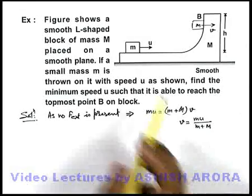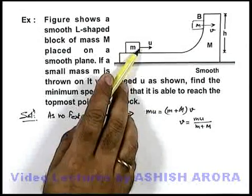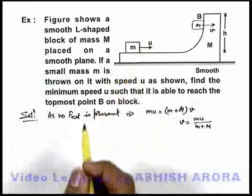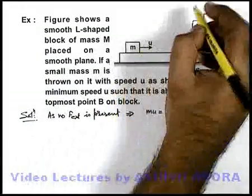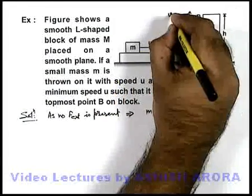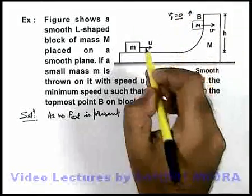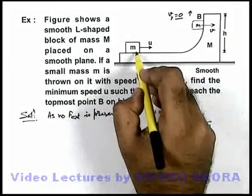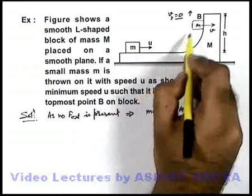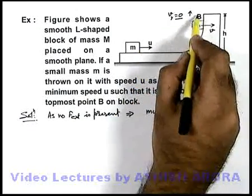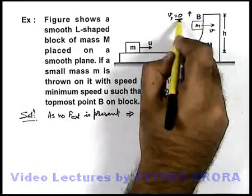Now in this situation, we are required to find the initial speed such that it will be able to reach the topmost point. So at the topmost point we can say its vertical y direction velocity will be equal to zero, because it was thrown with the minimum speed such that it will just be able to reach the point B. So at point B its vertical velocity becomes zero.